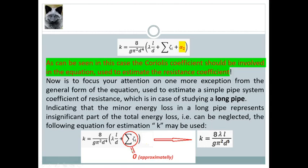The following equation for the estimation of K may be used. Below you can see the transformation. Taking into account that there will be almost zero minor energy loss, and after transforming the initial form of the equation mathematically, the final modified version of this equation is obtained and presented at the end of this slide.